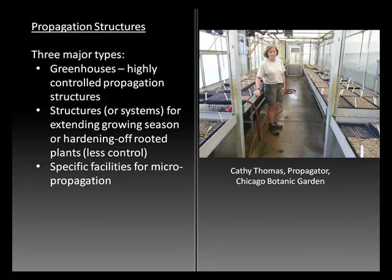There are three major types of propagation structures. The definitions and distinctions are pretty loose, but greenhouses are highly controlled propagation structures with heating and usually air conditioning. Then there are structures or systems for extending the growing season or hardening off rooted plants — these might be cold frames or Quonset hut type structures covered with plastic or shade cloth. And there are also specific facilities for micropropagation, usually sterile labs where the media and plants can be completely sterilized and grown in a pathogen-free environment.